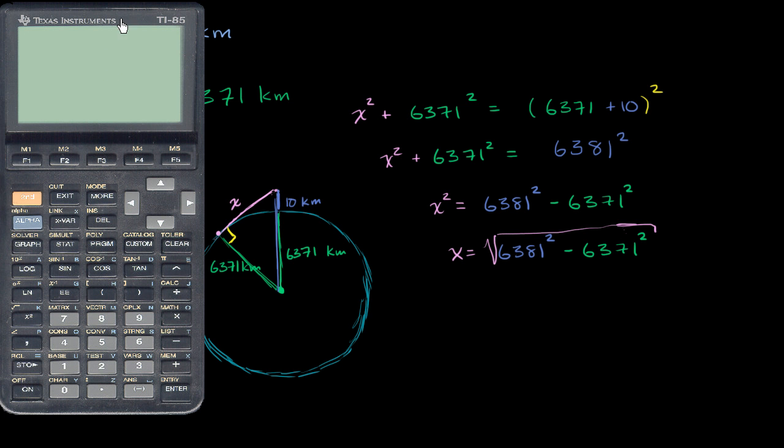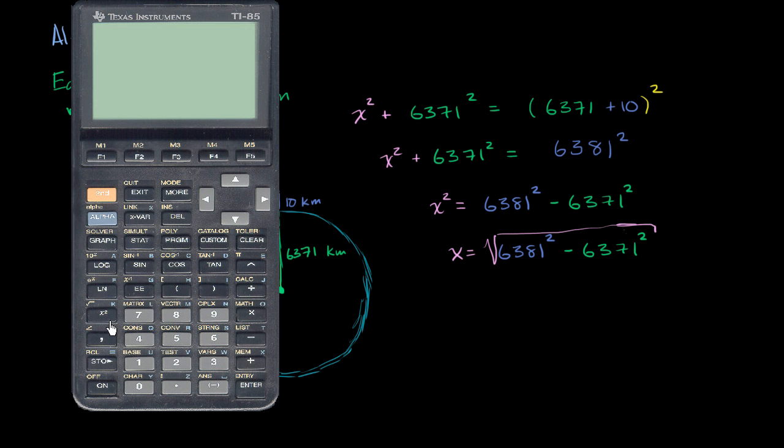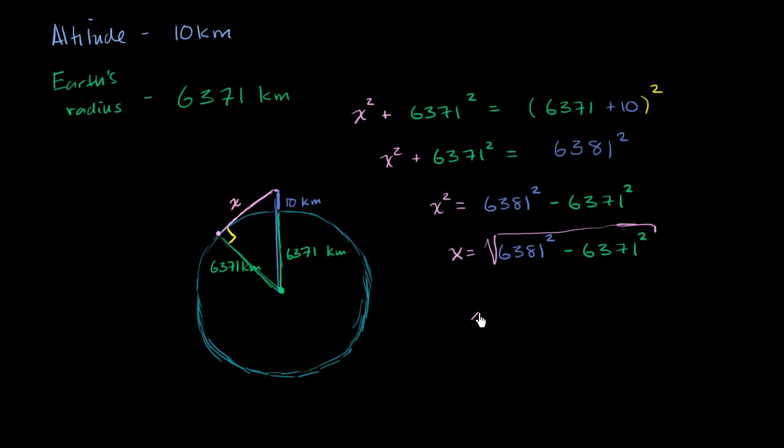So let me get my calculator out. And this is exciting, because now we can finally know, on a perfectly clear day, how far we can see out of a plane. So it's going to be the square root of 6,381 squared minus 6,371 squared, which is going to be, we deserve a drumroll, it's going to be roughly 357 kilometers. If we round to the nearest kilometer. So x is approximately equal to 357 kilometers in any direction.